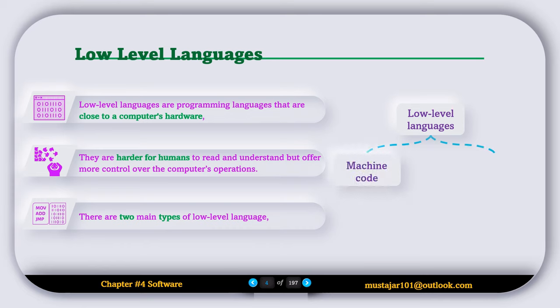There are two main types of low-level languages. First one is called the machine code and second one is the assembly language.